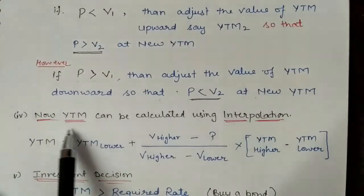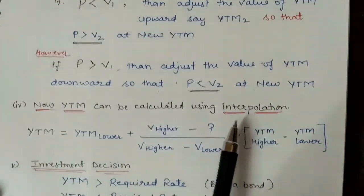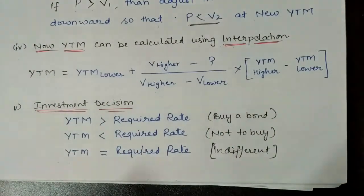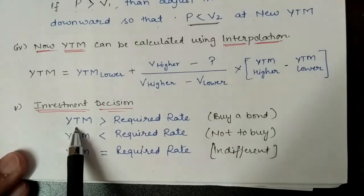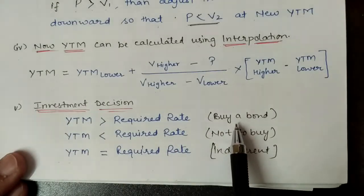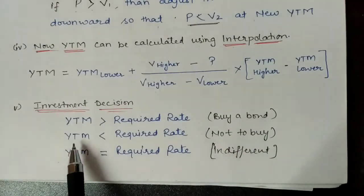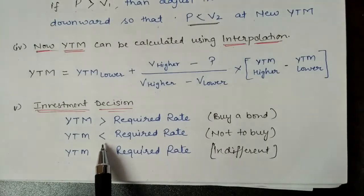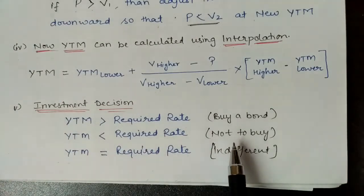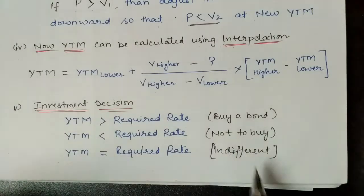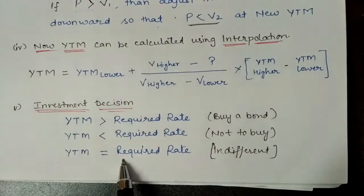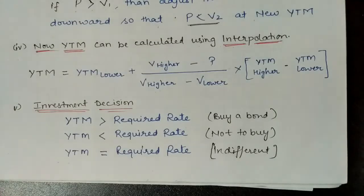After calculating YTM using interpolation, the investor can decide whether to invest or not. If YTM is greater than the required rate of return, buying the bond is a good option. If YTM is lower than the required rate of return, the investor should not buy and should sell whenever possible. If YTM equals the required rate of return, the investor is indifferent — they will receive a fair rate of return and may either buy or sell.